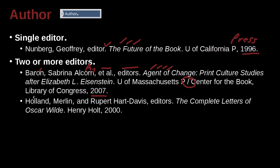The first person is last name first — Holland — first name Merlin. We have a comma, and. A-N-D. You do not use the ampersand — you cannot use the ampersand. You must use a-n-d. So here we have our 'and'. Now look: Rupert Hart-Davis. That's a person's name. Some people's English names can be written with a hyphen like that. That's okay.